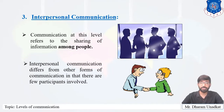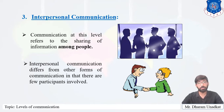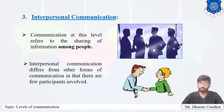The third level is interpersonal communication, which refers to the sharing of information among people — communication between two or more individuals. Compared with other forms, we examine how many people are involved, how close they are physically, how many sensory channels are used, and the feedback provided. Interpersonal communication differs in that few participants are involved, they are in close physical proximity, many sensory channels are used, and feedback is immediate.